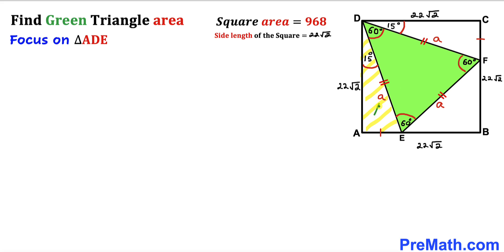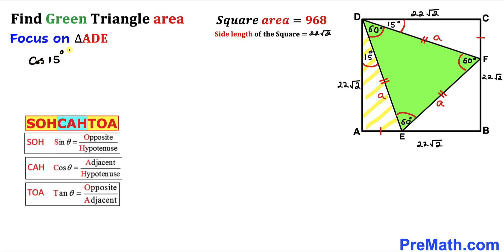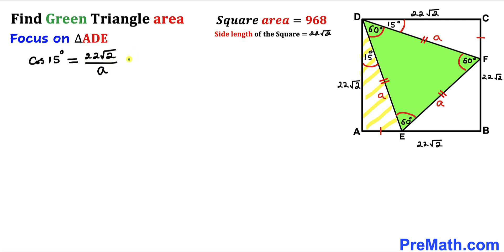Next, let's focus on right triangle ADE. Recalling SOH-CAH-TOA, we are interested in cosine of 15 degrees, which equals adjacent divided by hypotenuse. For the 15-degree angle, the adjacent side is 22√2 and the hypotenuse is a. So cosine of 15 degrees equals 22√2 divided by a. Using cross multiplication, a equals 22√2 divided by cosine of 15 degrees.